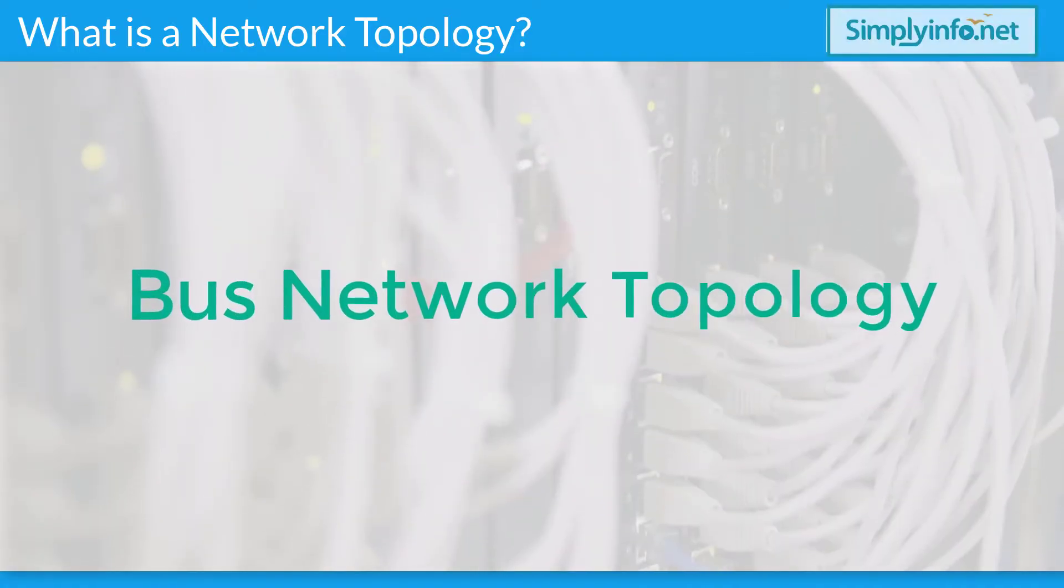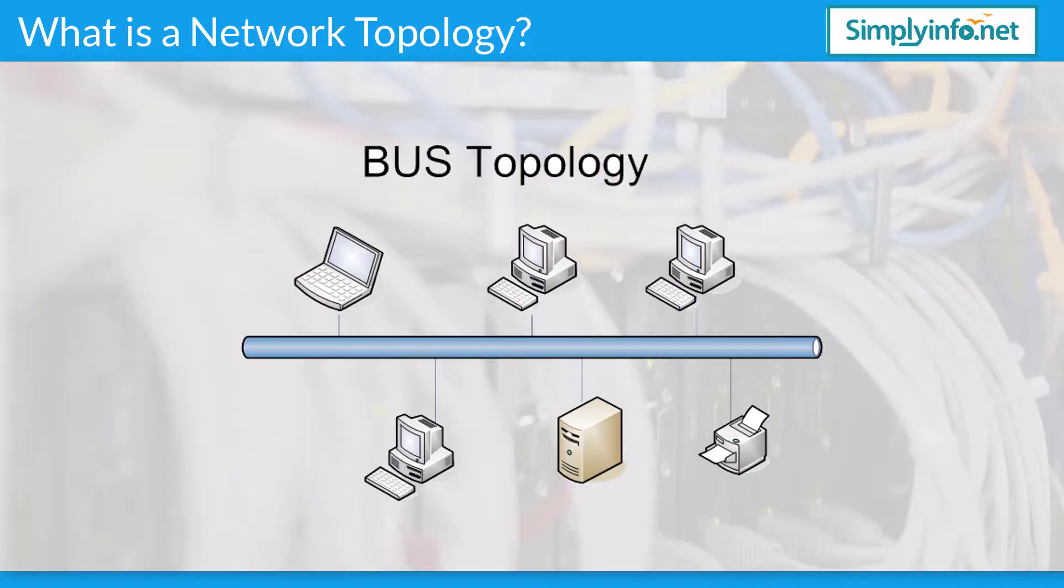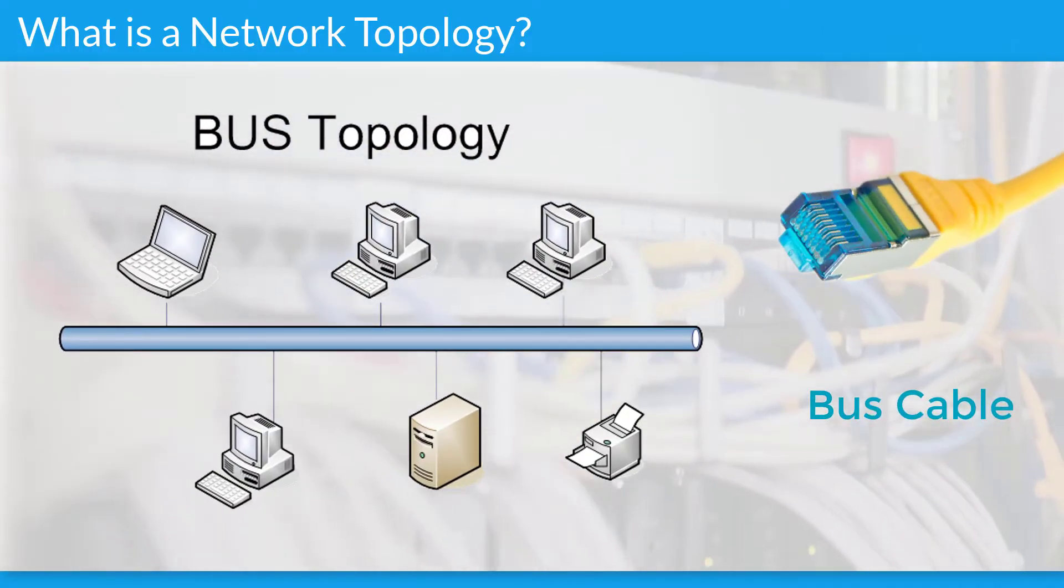Let's look into Bus Network Topology. In the Bus Network Topology, every workstation is connected to a main cable called the bus. Therefore, in effect, each workstation is directly connected to every other workstation in the network.